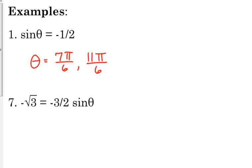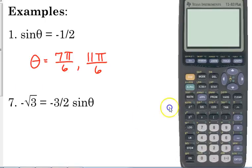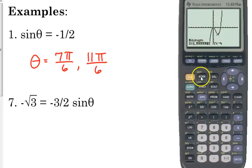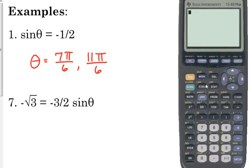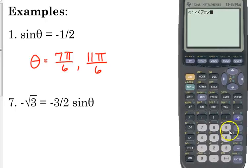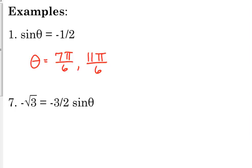Since it's an equation, you can check your solutions. Put your calculator in radian mode — we always want answers in radians. Type in sine of 7π/6, press enter, and it gives you negative 0.5, which is negative one half. If you type in 11π/6, it gives you the exact same answer.